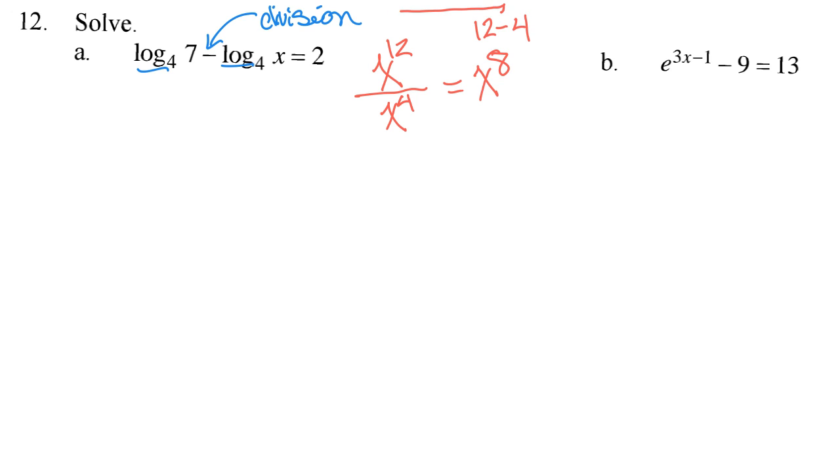So this becomes x to the 8th because I'm subtracting 12 minus 4. Well, since logs and exponents are inverses of each other, if I have subtraction of two logs, it goes to the division of the pieces that follow the words log.